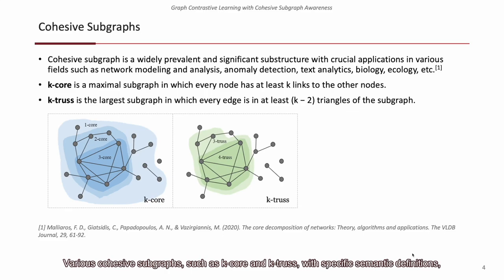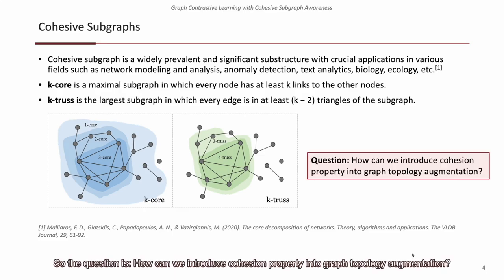Various cohesive subgraphs, such as K-core and K-truss, with specific semantic definitions, have been recognized as critical structures in domains like social network analysis and bioinformatics. So the question is, how can we introduce cohesion property into graph topology augmentation?